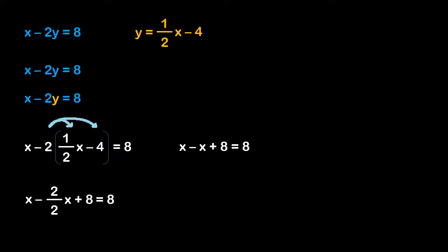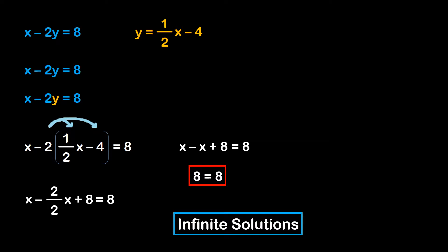Since 2 divided by 2 is 1, we have x minus x plus 8 is equal to 8. The x terms cancel out, and we're left with 8 is equal to 8. Once again, we have a number equal to itself, which is true for any values of x and y — so we have an infinite number of solutions. That means these two equations are the same line. If you convert the standard form equation to slope-intercept form, you'll find it gives y equals 1/2 x minus 4, the exact same equation.